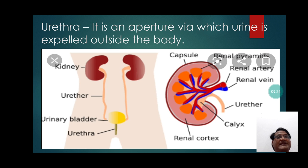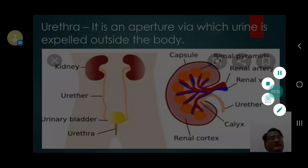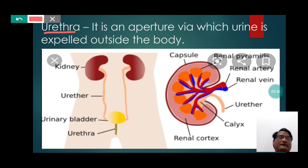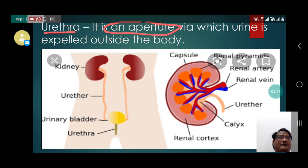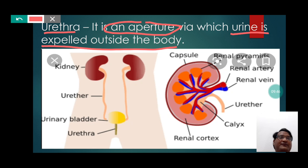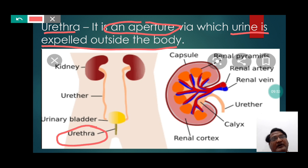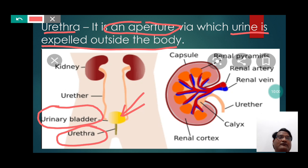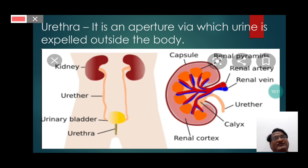Urethra — it is an aperture by which urine is expelled outside the body. The urethra is an important part of the human excretory system. When the urinary bladder exceeds 900 ml of urine, the urine is discharged outside the body by the help of a tube-like structure called the urethra.